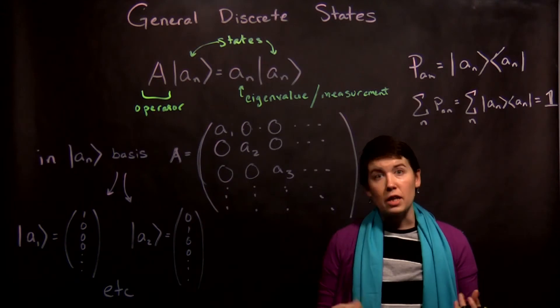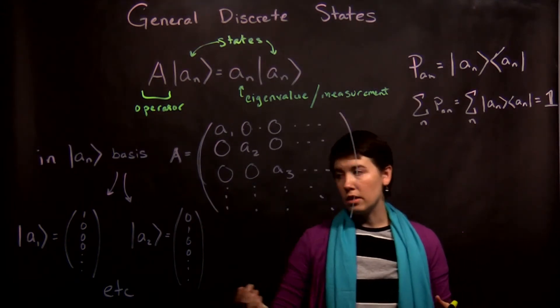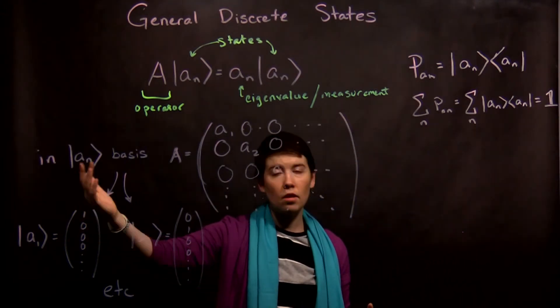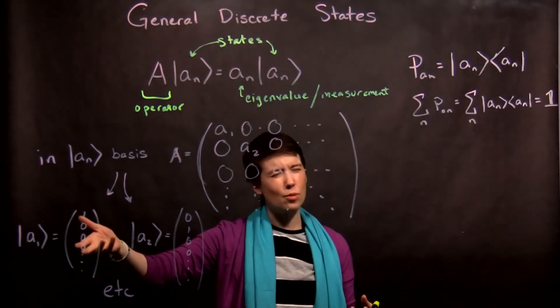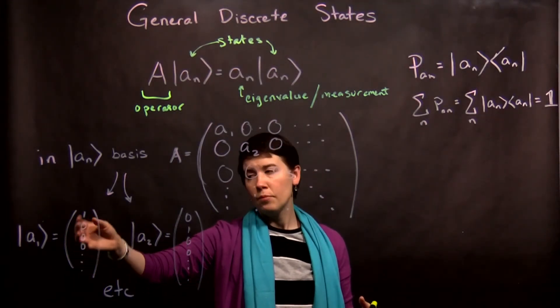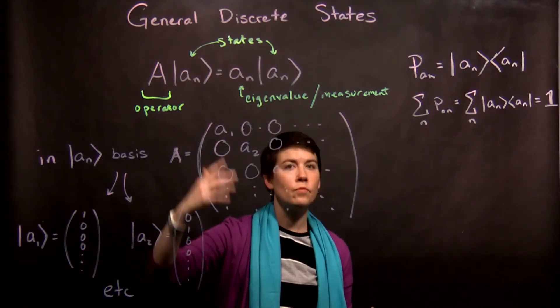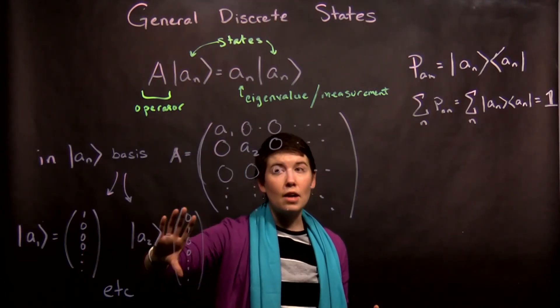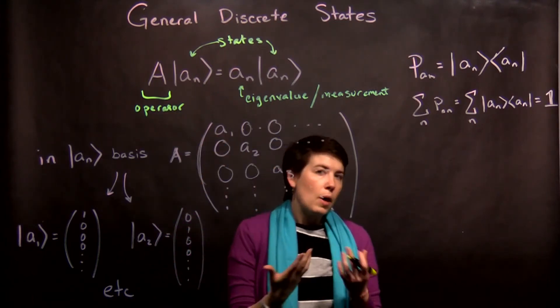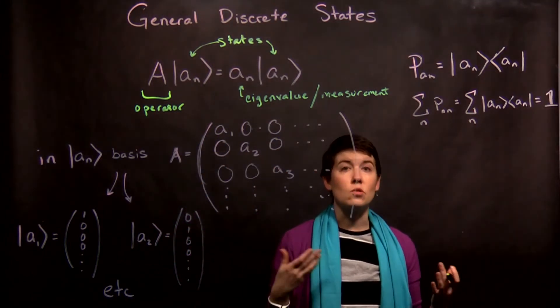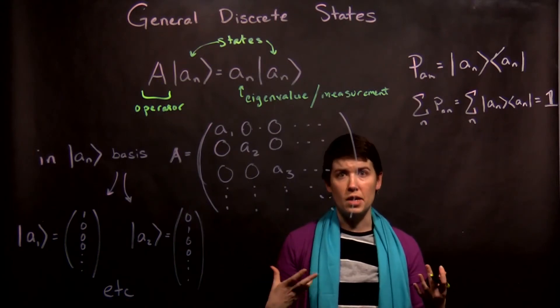So each of our eigenvectors in the basis where they're diagonal is simply one, and then the rest are zeros. And it should be pretty obvious by now that this is going to be a normalized vector. So our second entry would be zero, and then one, and then the rest zeros. And the size of this depends on how many different discrete states there are needed to actually span the space.